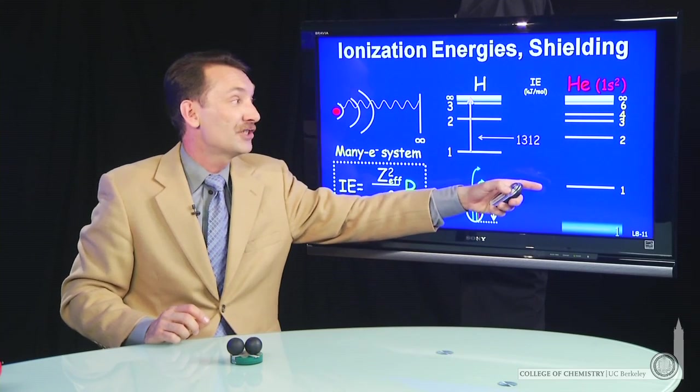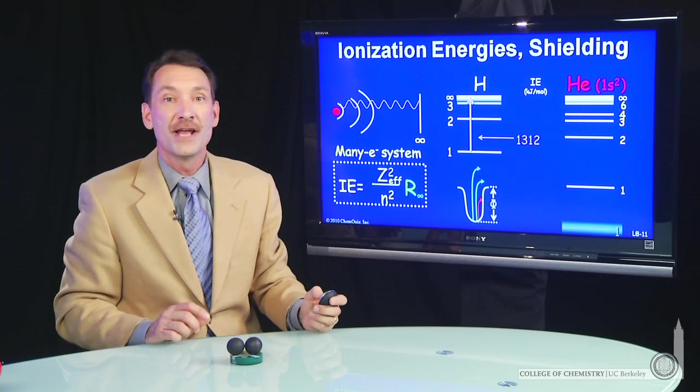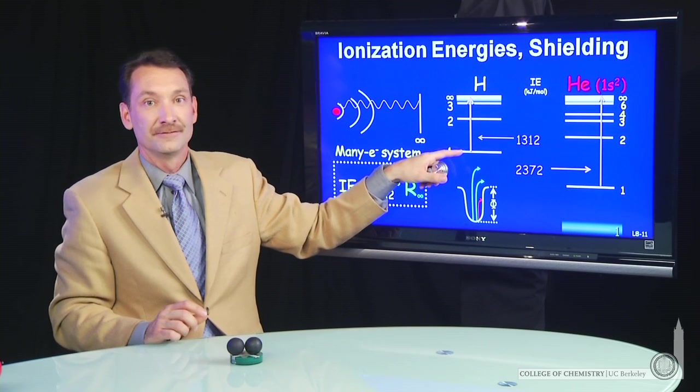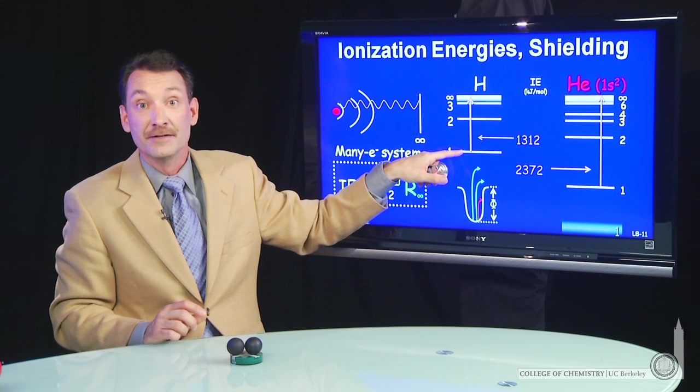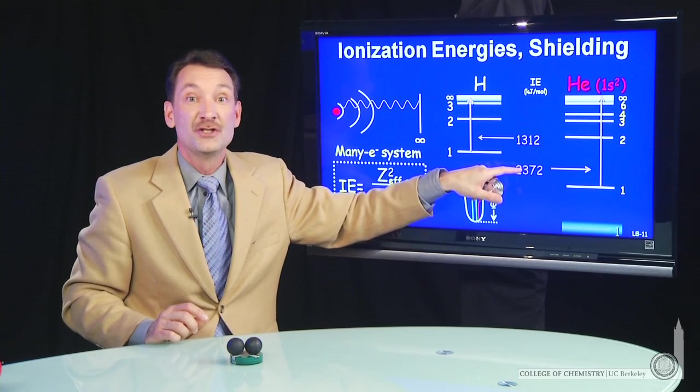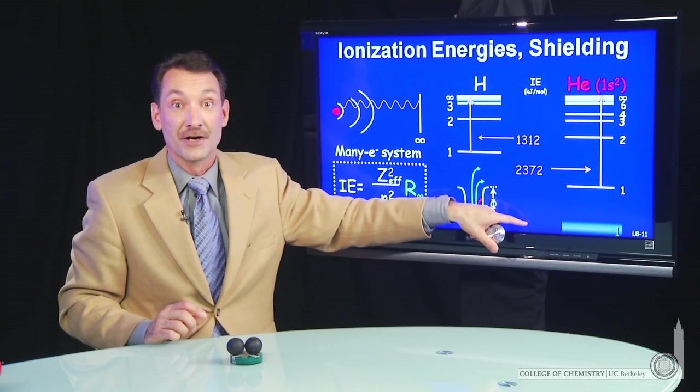If you look at the ionization energy for helium in the 1s2 state, you find that that ionization energy is not exactly like if it were one nuclear charge, like hydrogen. It's somewhere in between two nuclear charges and one nuclear charge.